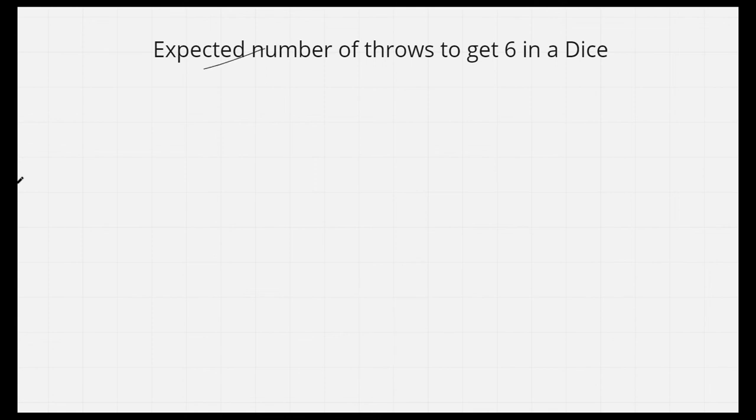We need to find expected number of throws to get 6 in a dice. When it is not mentioned, it is always an unbiased dice. That means the probability of every number from 1, 2, 3, 4, 5, 6 is 1 by 6. Each probability is 1 by 6.